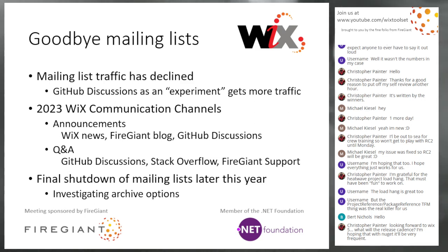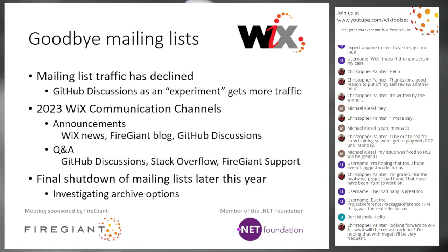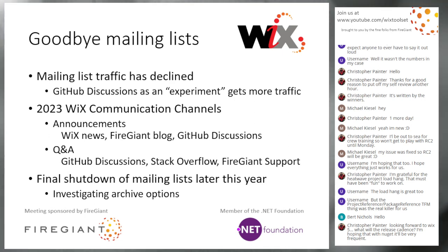Q&A will be on GitHub Discussions — that's already been there. Stack Overflow will continue to be a place. For customers of FireGiant, they can go to FireGiant support. So that's where we're going to centralize. The final shutdown of the mailing list will be later this year, probably sometime this summer. We are looking into archive options because we don't want to lose all the data. I'll send a mail to the mailing list after this meeting or after RC2 is out to tell people we're shutting these down — go ask your questions on GitHub Discussions.